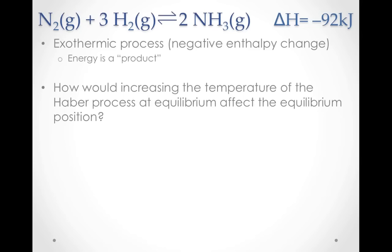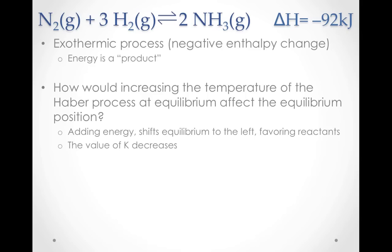Let's consider the Haber process again. This reaction has a negative enthalpy change, which means it's an exothermic reaction — energy is produced. How would increasing the temperature of the Haber process affect the equilibrium? Adding energy would shift the equilibrium away from the product side, causing the equilibrium to shift to the left, favoring reactants. At this new temperature, the law of mass action tells us that the value of the equilibrium constant would be decreased.